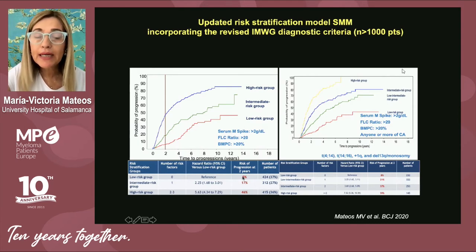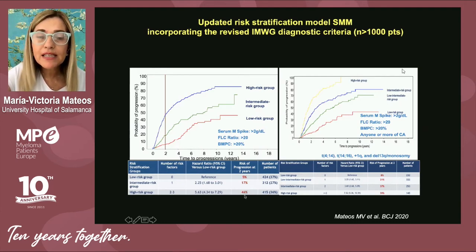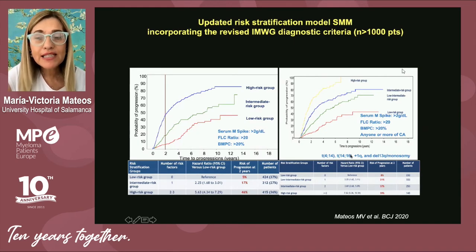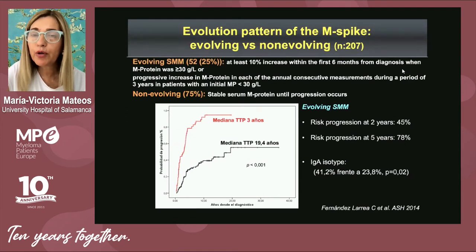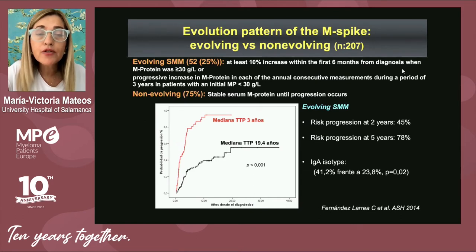With none of the three risk factors, the risk is 5% at two years. With one risk factor, the risk is intermediate — 17% at two years. With two or three risk factors, the probability of progression is approximately 50% at two years, constituting the high-risk smoldering myeloma group. Cytogenetic abnormalities can also be incorporated. A practical approach is to monitor how the M component evolves over time — if it is increasing, the probability of progression is higher than if it remains stable.